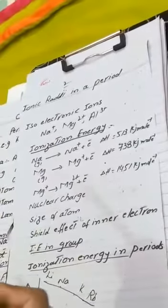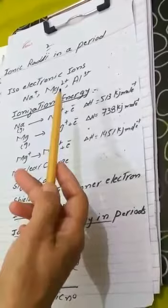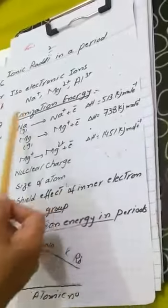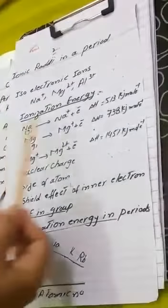Isoelectronic ions are ions which have the same number of electrons. For example, sodium ions, magnesium ions, and aluminium ions — although their atomic numbers are different, their ions have the same number of electrons, which is 10 electrons in their outermost configuration. That is why these are known as isoelectronic ions. 'Iso' means same, so ions with the same number of electrons are called isoelectronic ions.